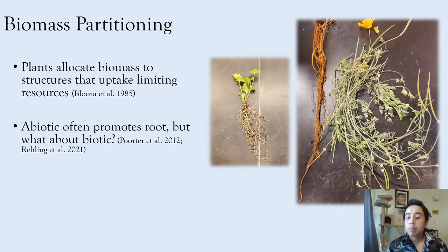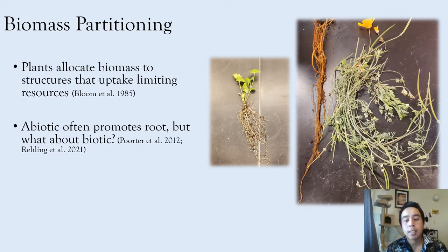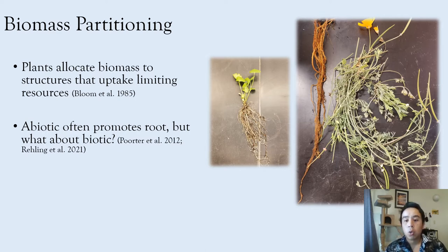Abiotic stress often promotes root biomass partitioning, but biotic stressors are often a little more mixed. This is because biotic stressors like competition or pest and disease can cause plants to become limited in other resources aside from direct space or light, which would generally increase above-ground growth. But because competition can also deplete resources within the local soil environment, competition could also potentially increase root biomass partitioning.